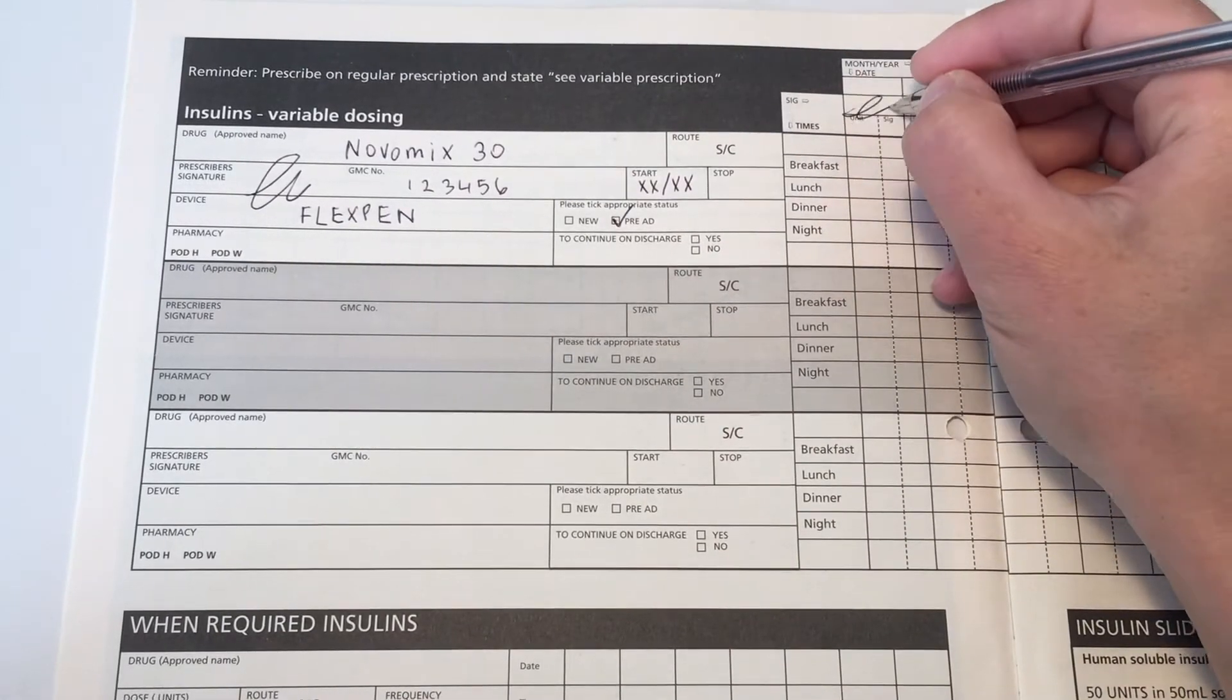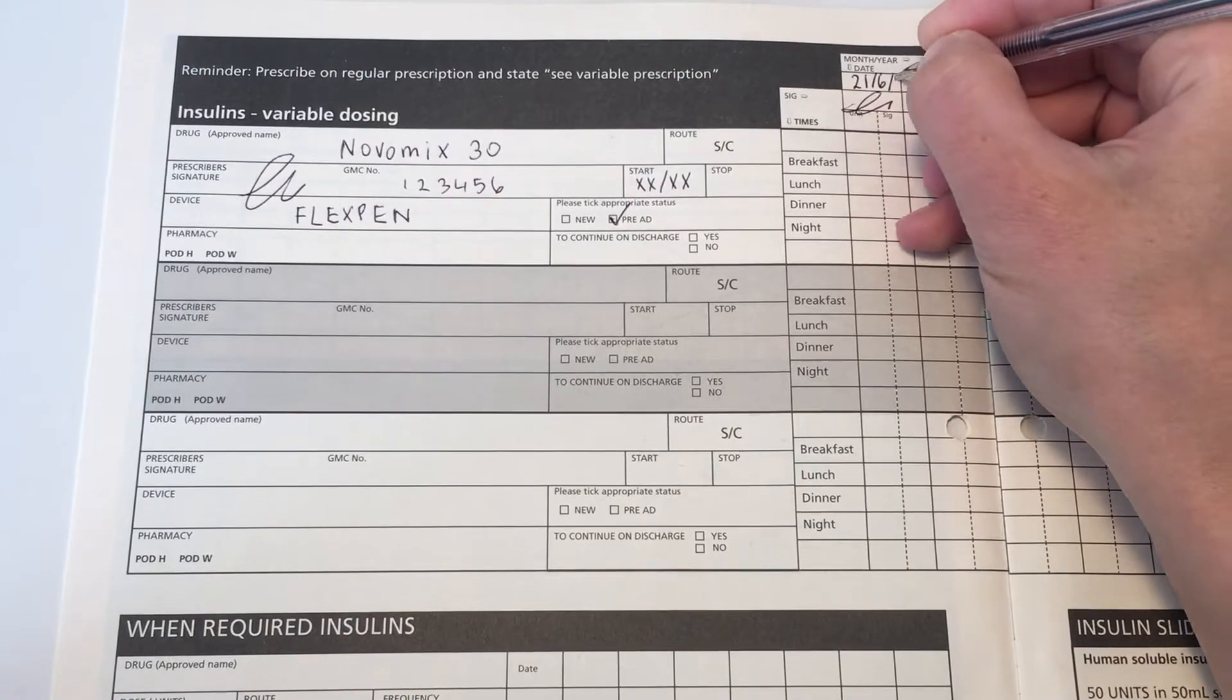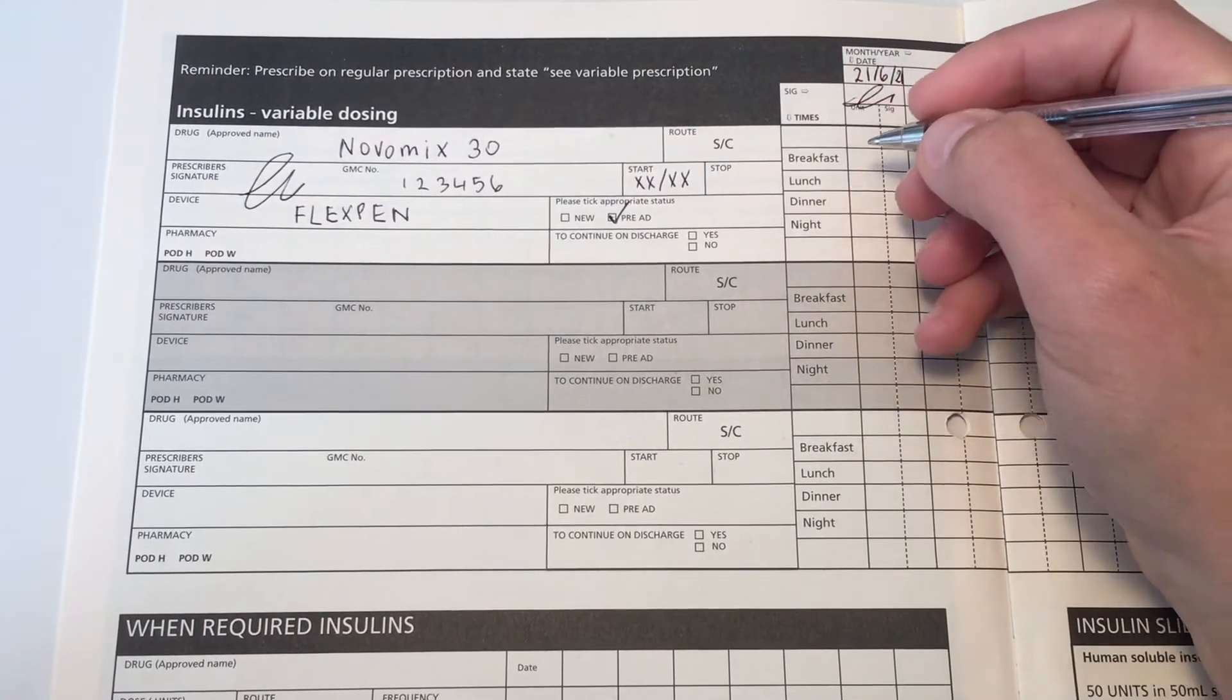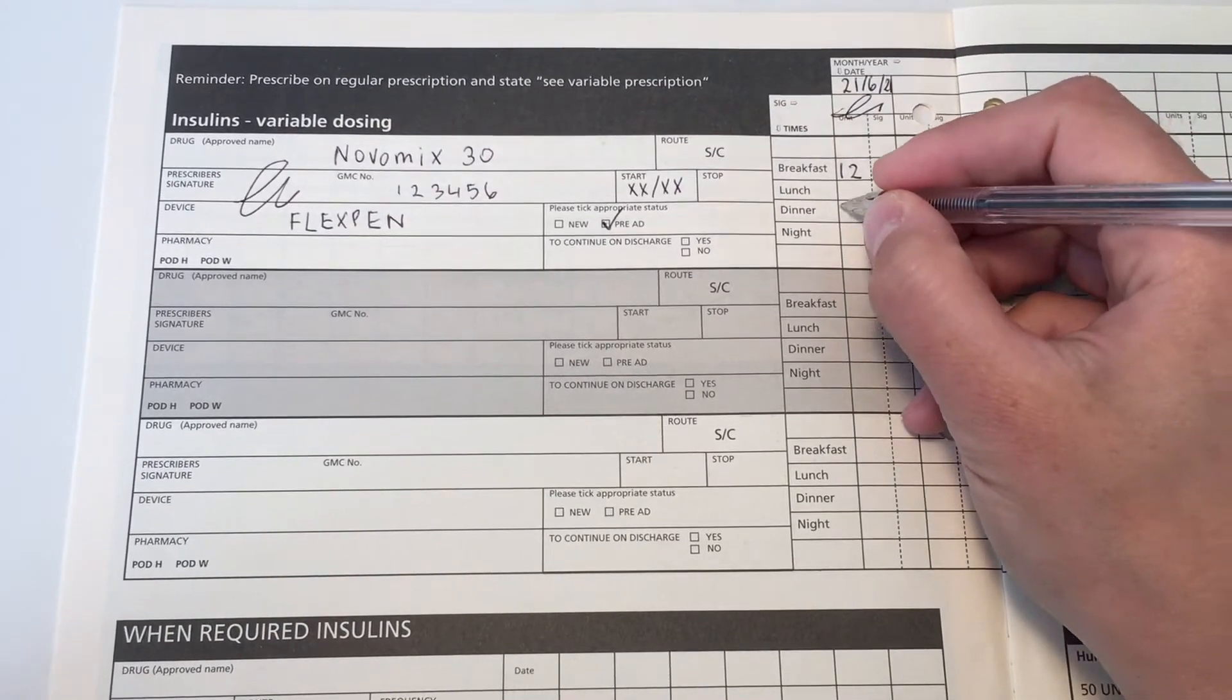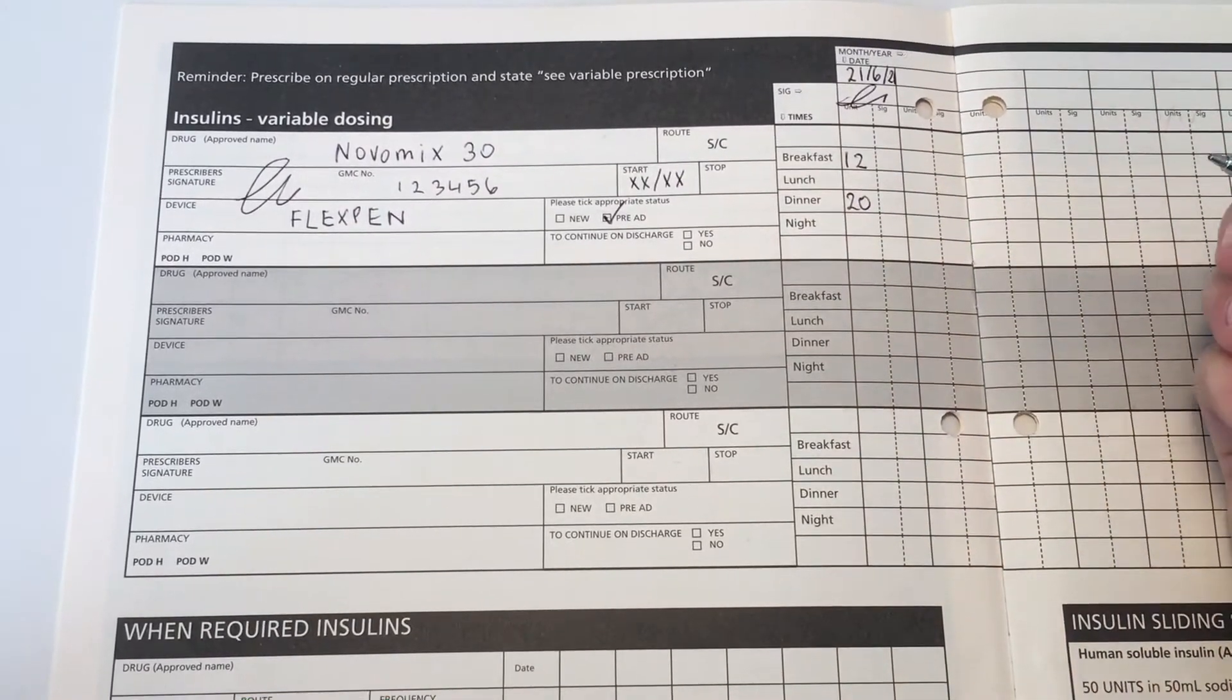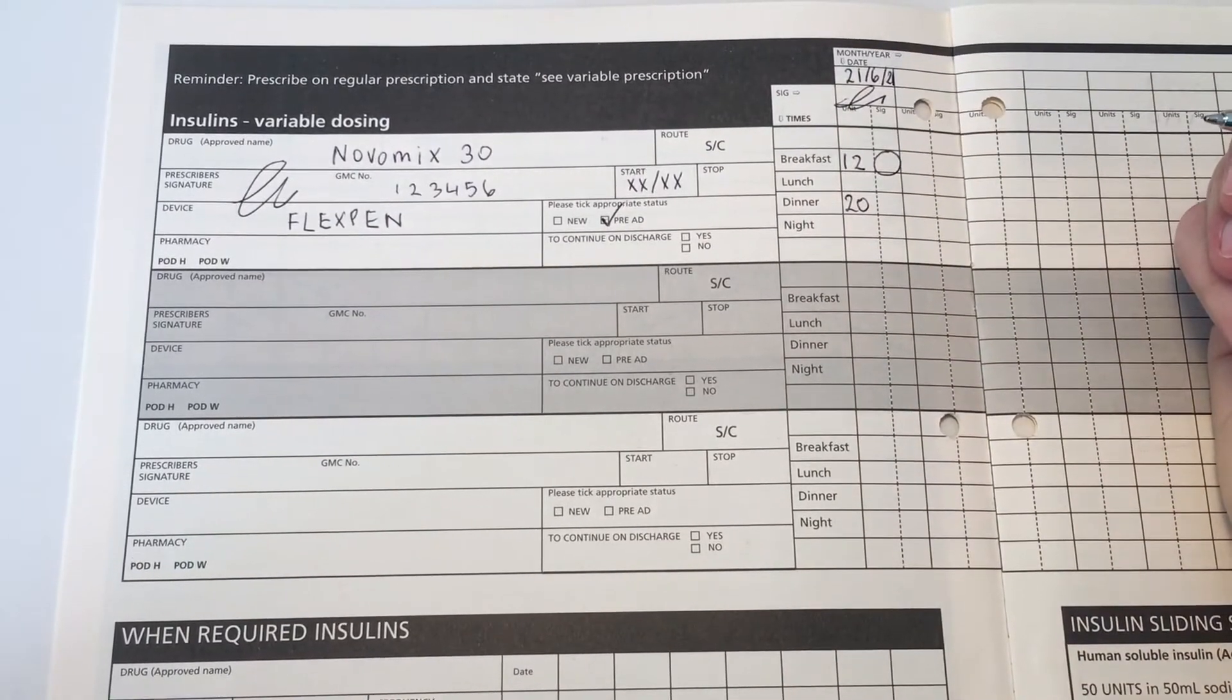The method of administration is FlexPen. You make sure you put the start date and put the date at the top of the prescribing section. This is a pre-admission drug so you want to make sure you tick that box. This medication is given with mealtime so you want to make sure that you put the units of insulin that the patient needs to be given in those sections. So this is relatively straightforward because the patient already comes with their prescription.